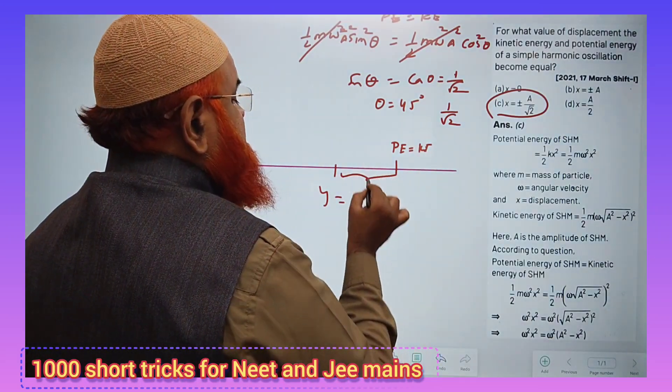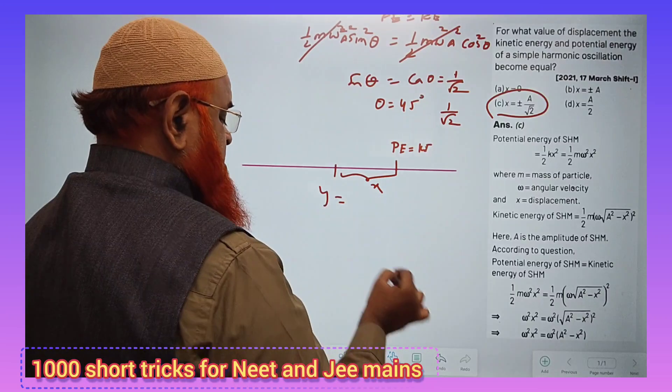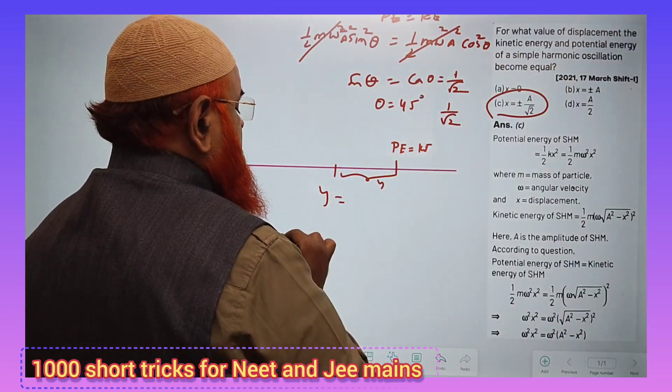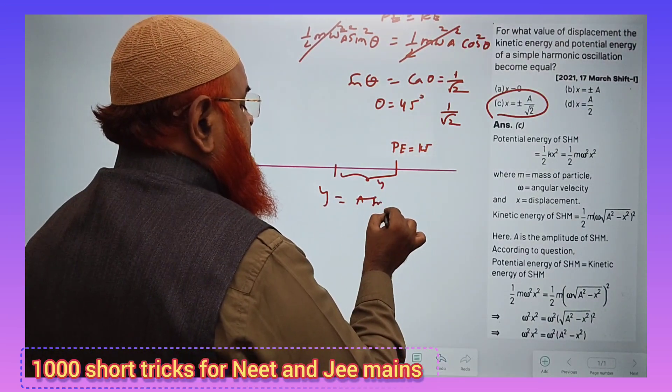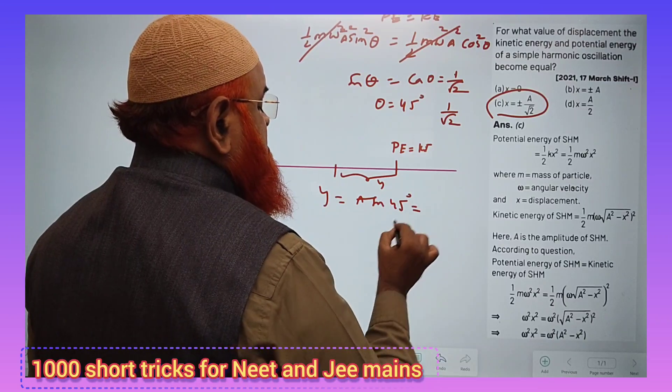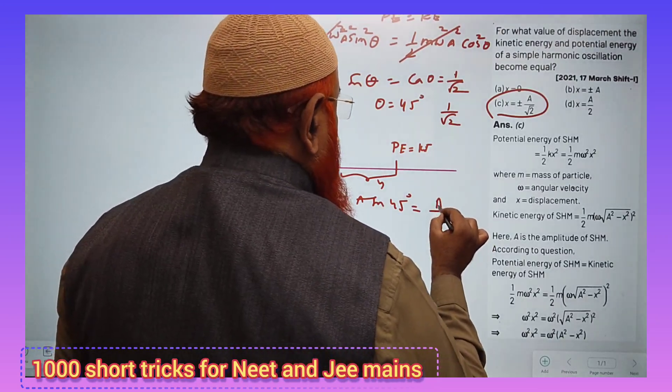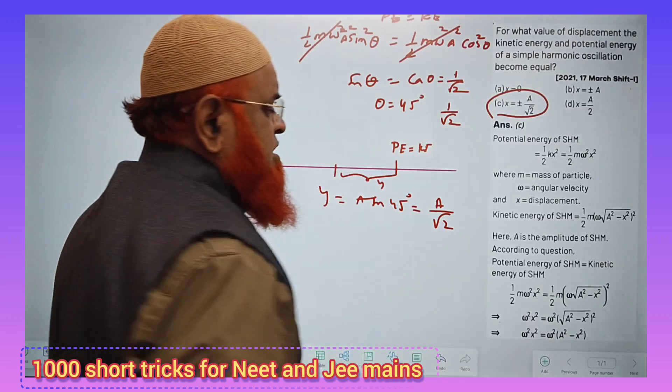Then I would like to find out what is this distance x here or y. So, y equals a sin 45 degrees, which is nothing but 1 by root 2. That means a by root 2. So this is going to be a shortcut formula.